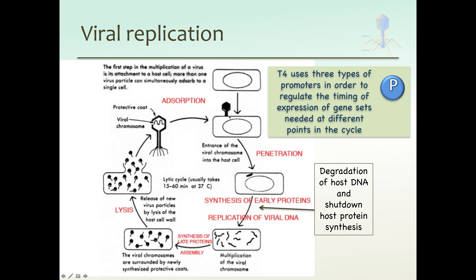In the beginning, the phage binds a specific molecule on the surface of the cell. For T4, this is the lipopolysaccharide. Once it binds these molecules, it's bound irreversibly — it's very stable. It causes conformational changes in the phage capsid protein, which allows release of the phage genome inside the cell. Once inside, before genome replication, it shuts down host DNA synthesis and host protein synthesis, and actually degrades the host DNA so it can use the nucleotides for its own DNA synthesis.